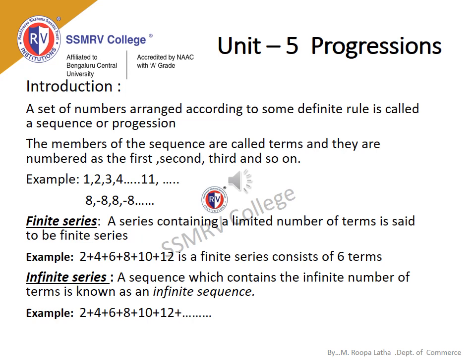Another example: 8, −8, 8, −8, 8, −8 and so on. There are two types of series: finite series and infinite series. A finite series is a series containing a limited number of terms. For example, 2 + 4 + 6 + 8 + 10 + 12 is a finite series consisting of 6 terms. An infinite series is a sequence which contains an infinite number of terms — for example, 2 + 4 + 6 + 8 + 10 + 12 + 14 + ... and so on.